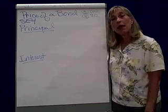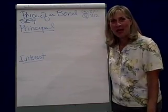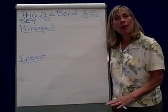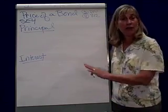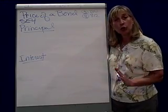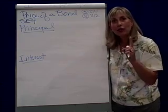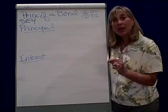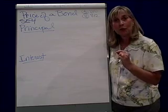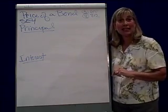We make some assumptions about the value of money over time, and we take that promise to pay back the principal of the bond, say 20 or 30 years from now, and we bring it back into current purchasing power. To do that, since it's a single sum, we'll use Table 3 of the present value tables. In your text, Table 3 is on page 810.